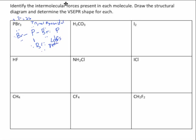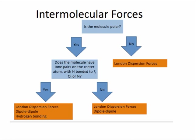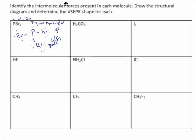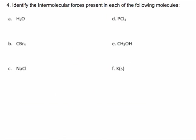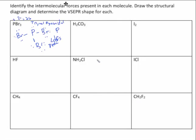If you go to this slide and look at the flowchart — is the molecule polar? Yes. So if it's polar, you just have to determine if it can hydrogen bond or not. Can it hydrogen bond? Does it have a hydrogen bonded to an F, O, or N? The answer is no, so there's no hydrogen bonding. That leaves it with London dispersion forces and dipole-dipole.